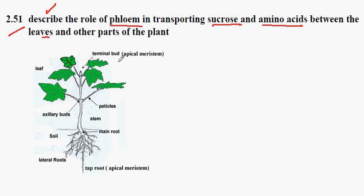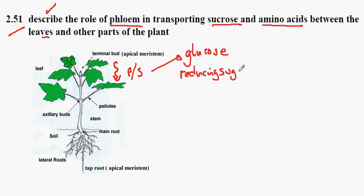The process starts with photosynthesis producing glucose. But plants don't transport glucose because this is a reducing sugar and it's quite chemically active.